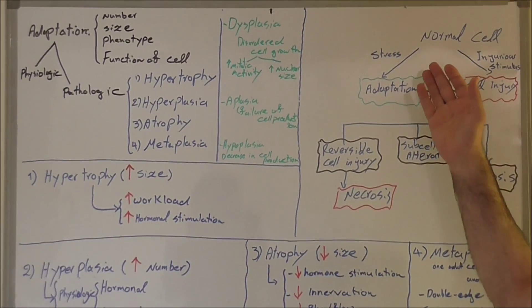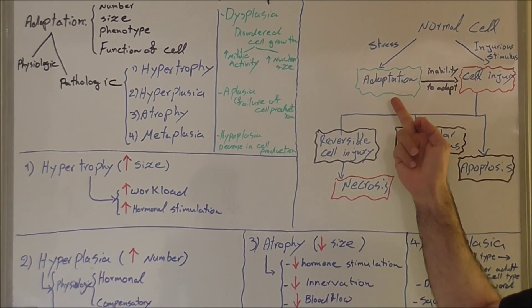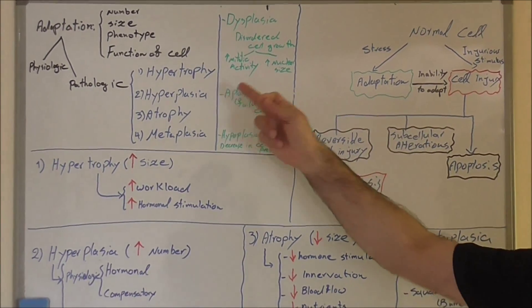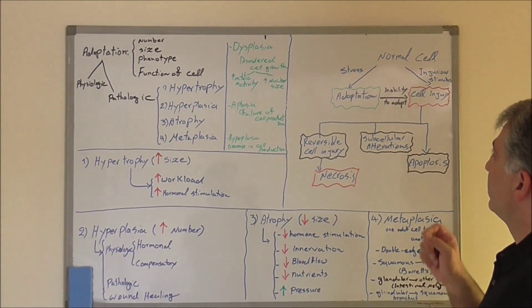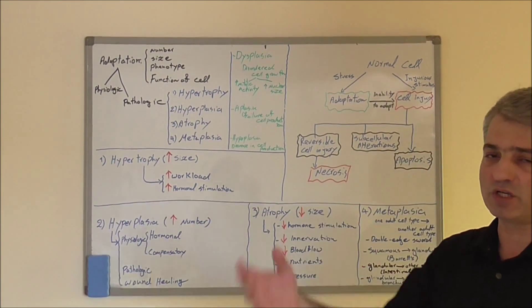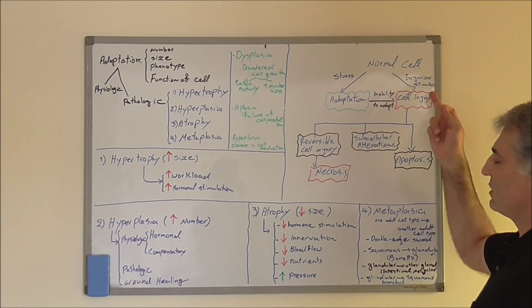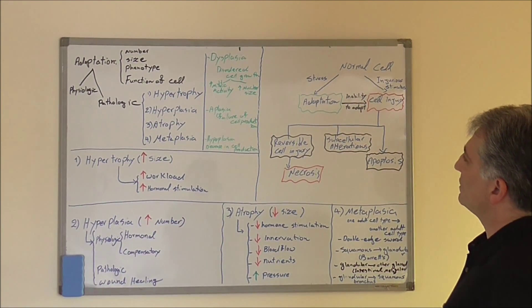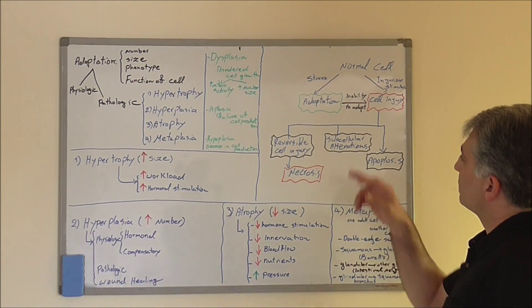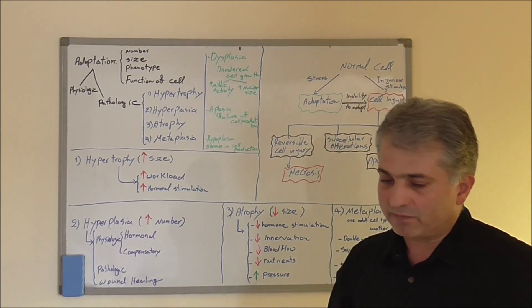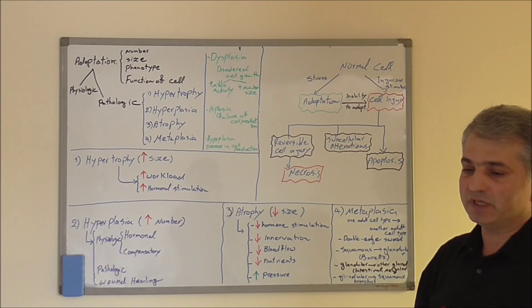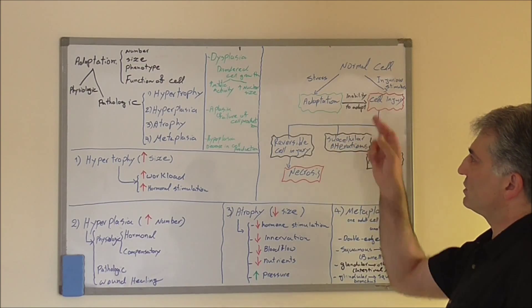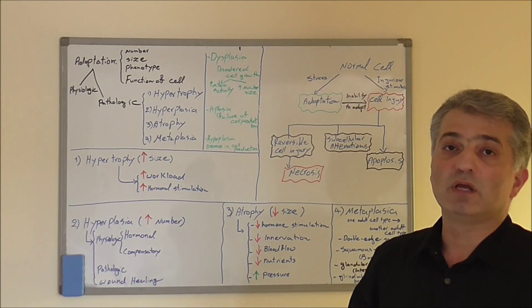If the cell can tolerate the stress, it will adapt to the situation. We call this adaptation, which I'll explain briefly today. But if the injury is too much for the cell and it cannot tolerate that, the cell will be injured, which I will discuss in detail later. Sometimes cells adapt, however this adaptation cannot be forever, and if there is too much stress, even after adaptation the cell can progress to injury or death.